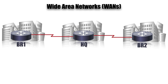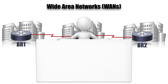We might have a direct connection between branch office one, the BR1 site, and the HQ site, and another connection between BR2 and HQ. Those are WAN links, and we've had different technologies over the years to construct them.